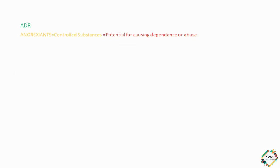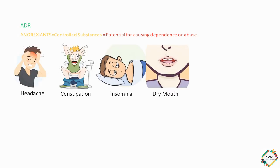All of the anorexiants are classified as controlled substances because of their potential for dependence or abuse. The common adverse effects include dry mouth, headache, insomnia, and constipation. At the same time, these anorexiants would increase the heart rate and blood pressure.